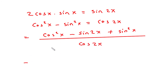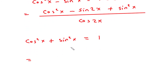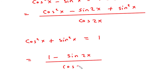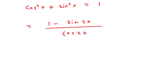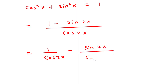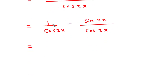We also have the Pythagorean identity: cos squared x plus sin squared x is equal to 1. Applying this, the numerator simplifies to 1 minus sin 2x. So we get 1 minus sin 2x divided by cos 2x. Separating the terms gives us 1 by cos 2x minus sin 2x by cos 2x.